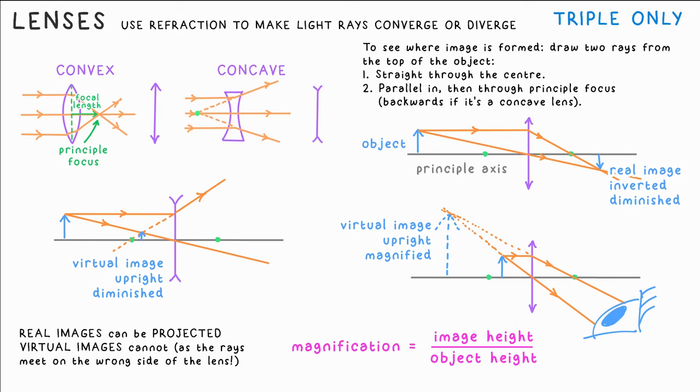The magnification of a lens is just the ratio of image height to object height. A magnification greater than one means the image is bigger than the object, less than one, it's diminished, it's smaller than the object.